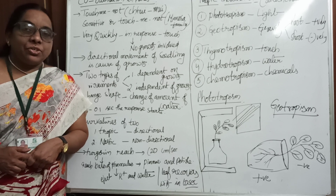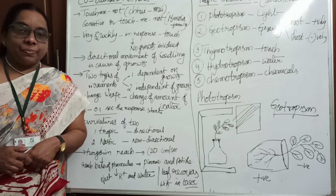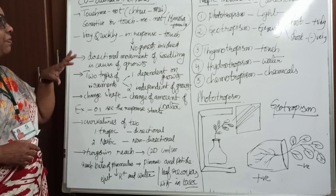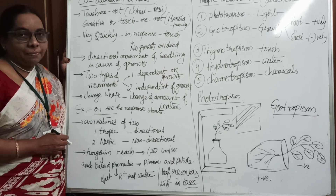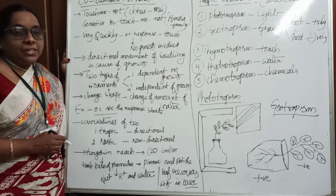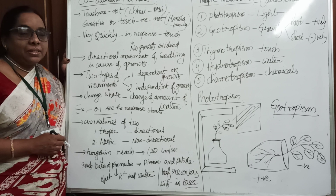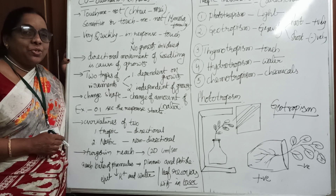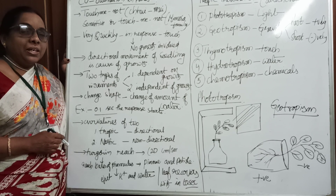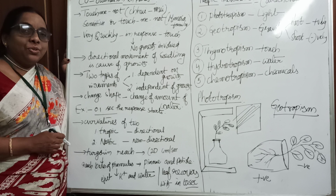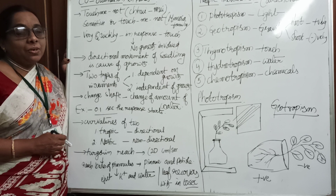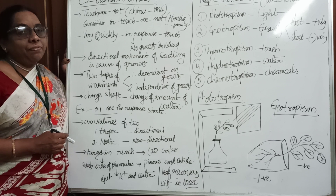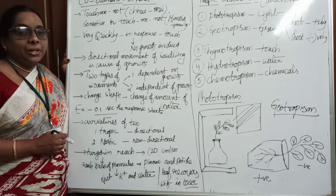Plants also have a coordination system — that is what we will learn today. A best example to start with is the touch-me-not plant, also called a sensitive plant. In Hindi it is called 'chui mui.' It belongs to the family Mimosa, and the scientific name is Mimosa pudica.